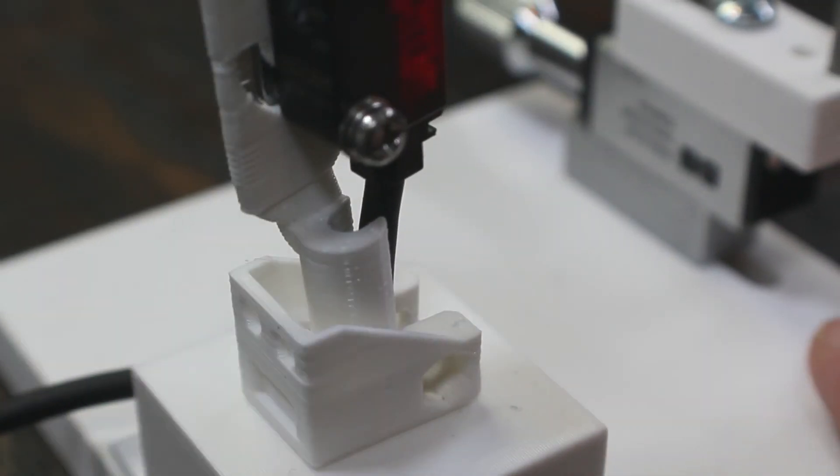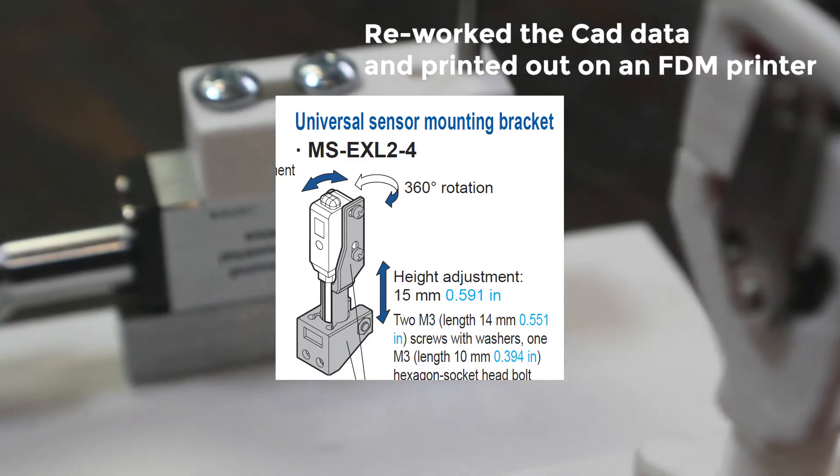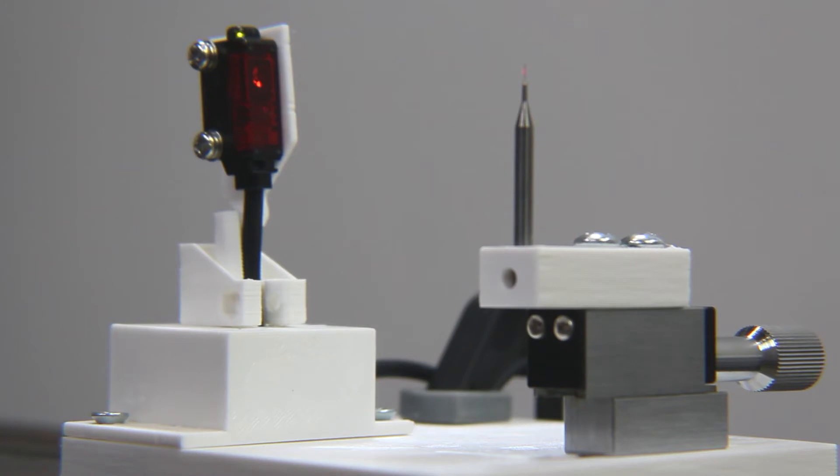I slightly modified an existing bracket design and added some slotted holes in order to get a larger adjustment angle and printed that out. Then I printed out this holder for the bits that would attach to the linear slide. Let's see if the sensor can detect the drill bit.